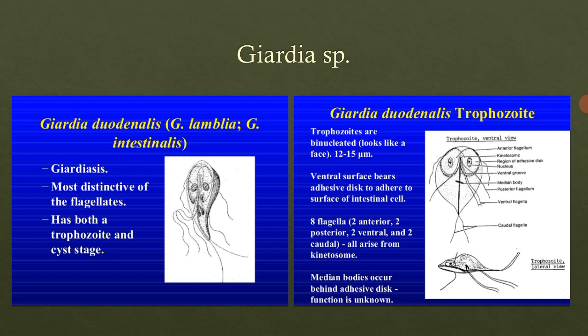Giardia lamblia is the flagellated protozoan parasite that will colonize and reproduce in the small intestine, causing Giardiasis. The infection produced by this protozoal parasite, Giardia lamblia, is called Giardiasis. The Giardia parasite attaches to the epithelium via an adhesive disc in the intestine.